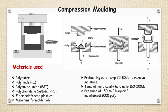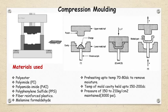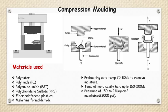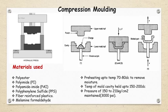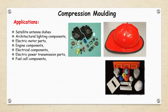Components prepared by compression molding are somewhat larger in thickness. Complex geometries cannot be prepared through compression molding. The materials preferred for compression molding are thermosetting plastics such as polyester, polyamide, polyamide imide, polyphenylene sulfide, fiber reinforced plastic, and melamine formaldehyde.